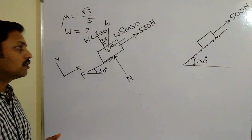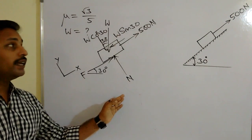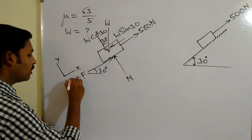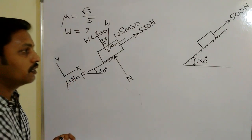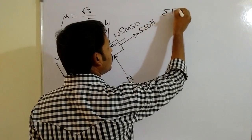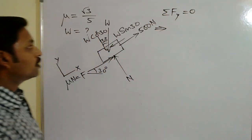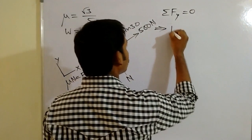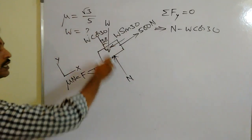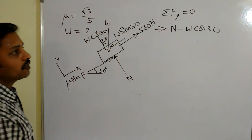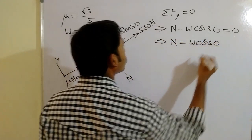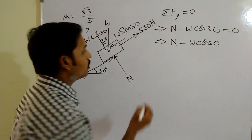Now apply two equilibrium equations: ΣFx = 0 and ΣFy = 0. I will consider ΣFy = 0 first, because N is along the y-axis and I need the relation F = μN, which requires knowing N first. Considering ΣFy = 0: N acts vertically upward (positive y-direction) and W cos30° acts in the negative y-direction. Therefore, N − W cos30° = 0, giving N = W cos30°.